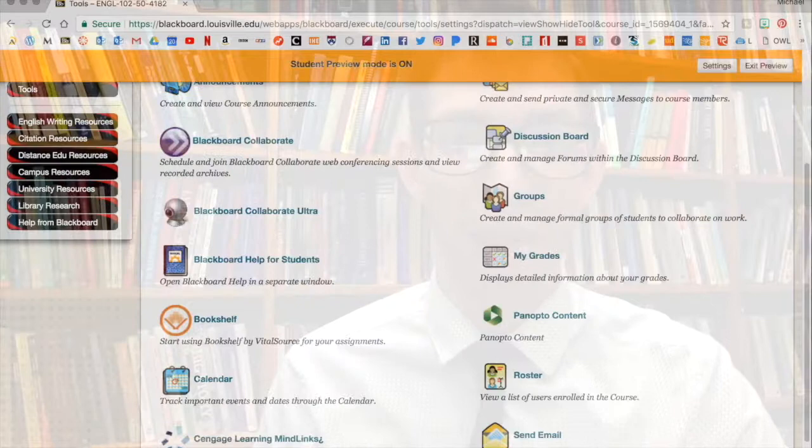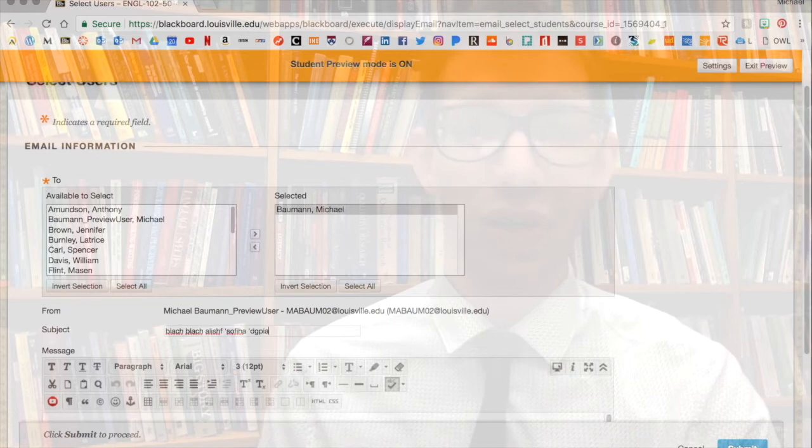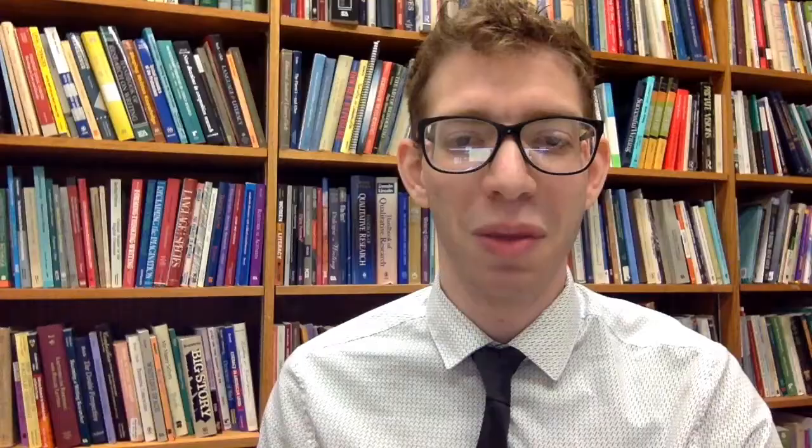Now, to complete the peer review, I just want you to follow a few steps. Draft your entire paper, then go to the Tools tab and select Email. Once you choose Select Users, you can find your peer's name and send your paper as an email attachment.